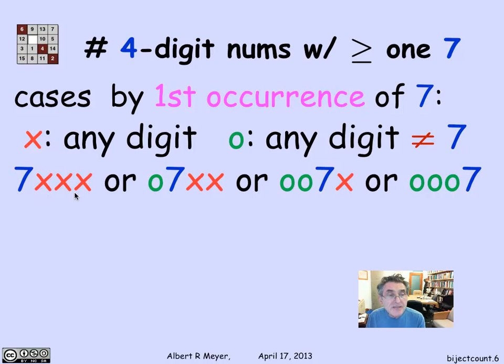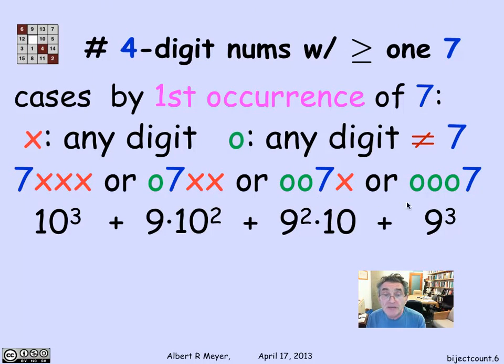Now these individual patterns are easy enough to count using the product rule, because here I have to count how many triples of any digits are there. Well, there's 10 digits, so it's 10 cubed. Here, how many sequences where the first choice is 9, and the second two choices are 10, and it's 9 times 10 squared. Here it's 9 squared times 10, and here it's 9 cubed. These are disjoint because they're distinguished by where the first 7 occurs. And so I just add them up, and I get this number. It's not especially interesting, but it's 3439.